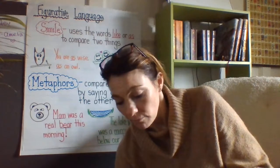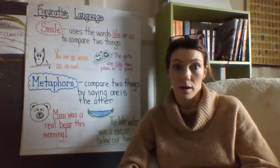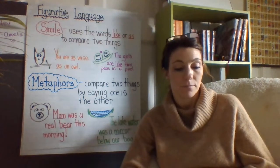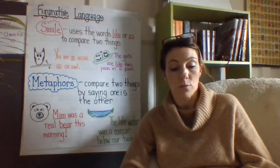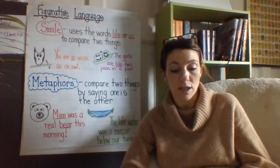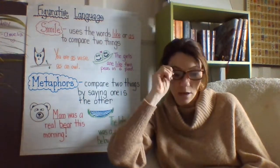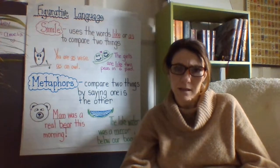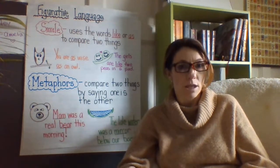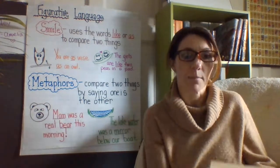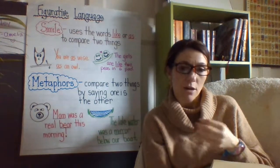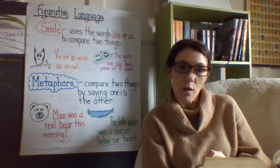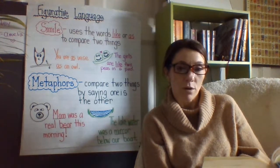I'm going to read to you from 'The One and Only Ivan' again — this is my go-to book because it has a lot of great figurative language. There's a chapter starting on page 27 called Stella: 'Stella says she is sure I will see another real live gorilla someday. I believe her because she is even older than I am and has eyes like black stars and knows more than I will ever know.' She has eyes like black stars — are Stella's eyes actually black stars? No. But the author is trying to get us to really understand what Stella's eyes look like by comparing them to stars.